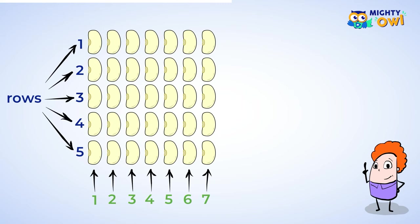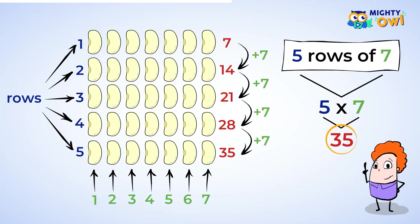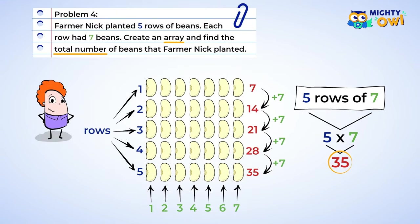So add the columns to make sure there are seven columns. Great! Now, create the multiplication problem. Five rows and seven columns means five multiplied by seven. Now you solve. Seven plus seven is fourteen. Fourteen plus seven is twenty-one. Twenty-one plus seven is twenty-eight. Last row. Twenty-eight plus seven is thirty-five. There are thirty-five bean plants in total.